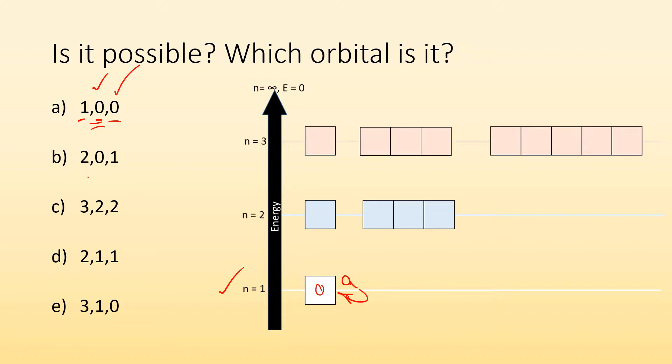All right, well, let's take a look at B. I have second energy level. Sure, I'm looking at this second energy level. Zero sublevel, which is this one right here. That's my S. And it's saying box number one. Uh-oh. No, this box has to be box zero. So this one, not possible. This is an impossible set of quantum numbers.